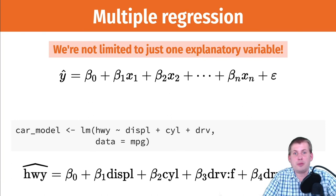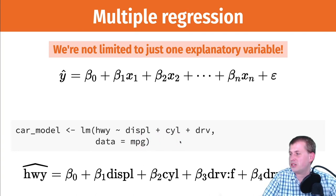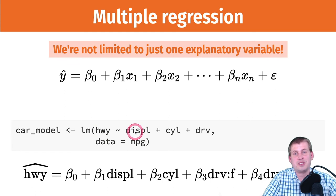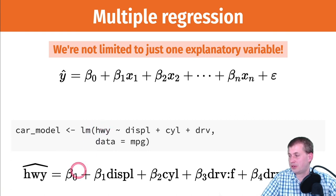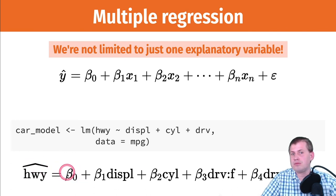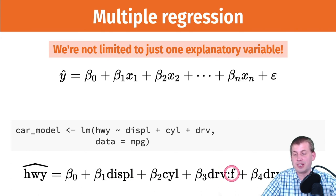In R, you add more x variables using the plus sign. Using the mpg data set: highway miles per gallon is explained by displacement plus cylinders plus drive. We read this as: predicted highway miles per gallon equals some intercept, plus beta-1 times displacement, plus beta-2 times cylinders, plus beta-3 times front-wheel-drive, plus beta-4 times rear-wheel-drive — because drive is a categorical variable.